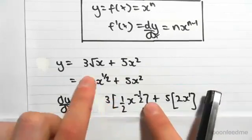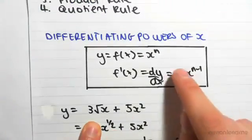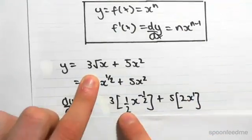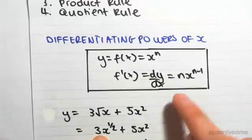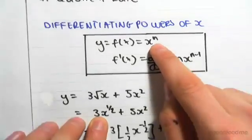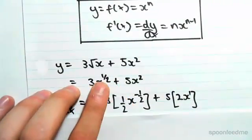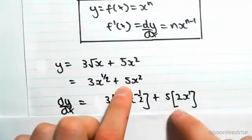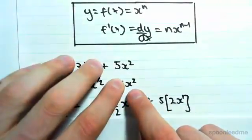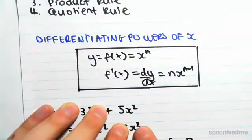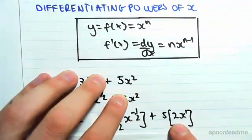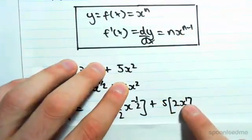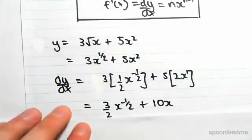The 3 is a constant, so we put that out the front. As we said, the n goes out the front, so 1/2 is going to pop out the front of x, and we subtract one from the original power. We originally had 1/2, so 1/2 minus 1 will be -1/2. Plus, 5 is a constant, put that out the front. The derivative of x² - the 2 goes out the front of x, and we subtract one from the power, so 2 minus 1 is 1.